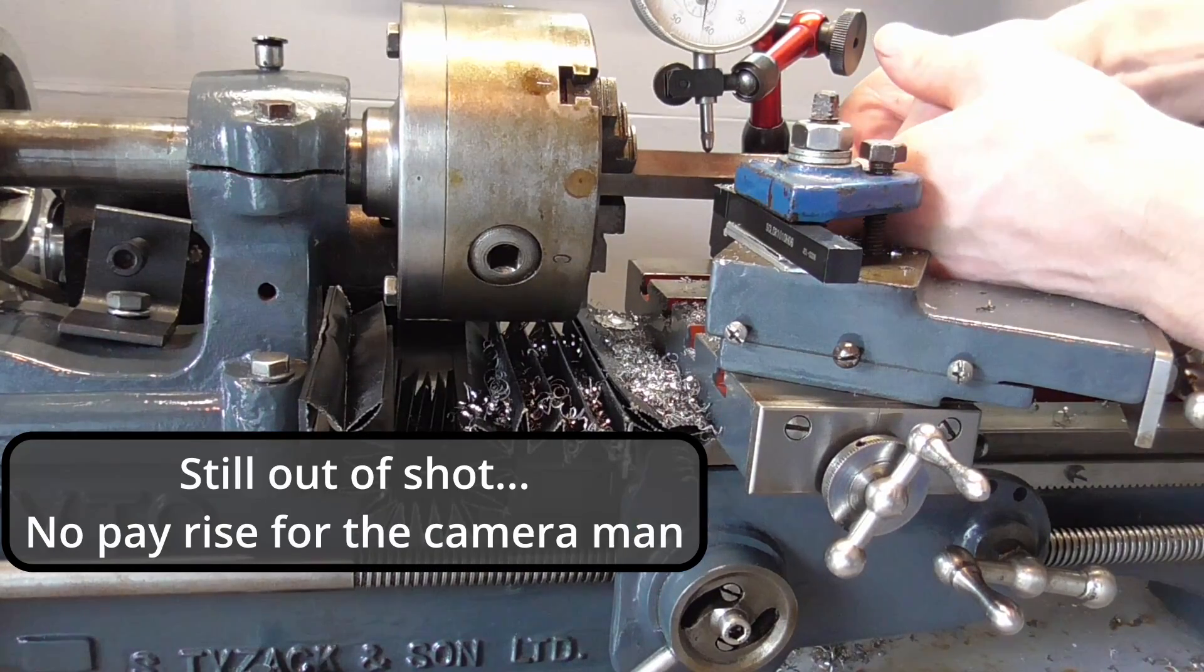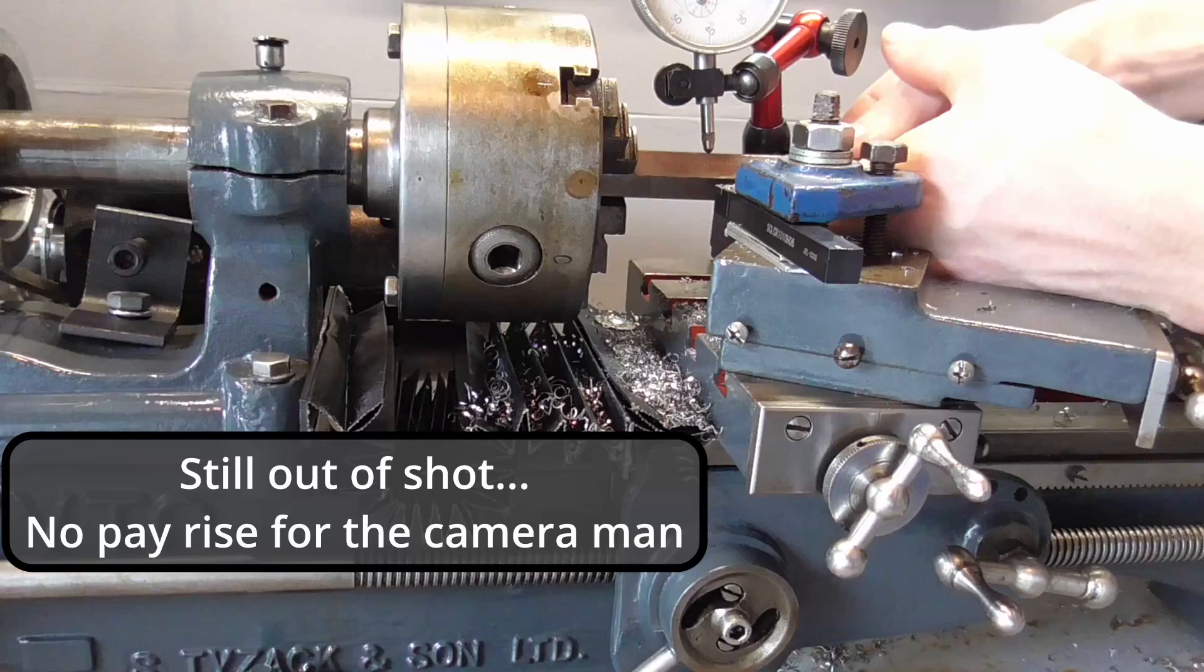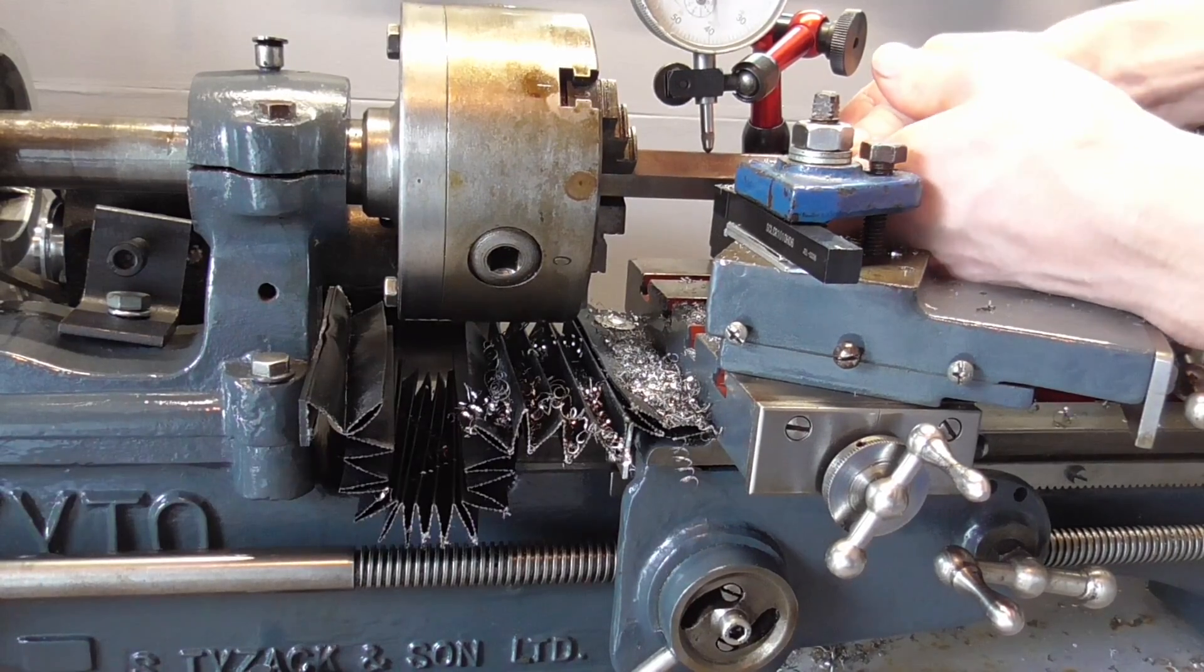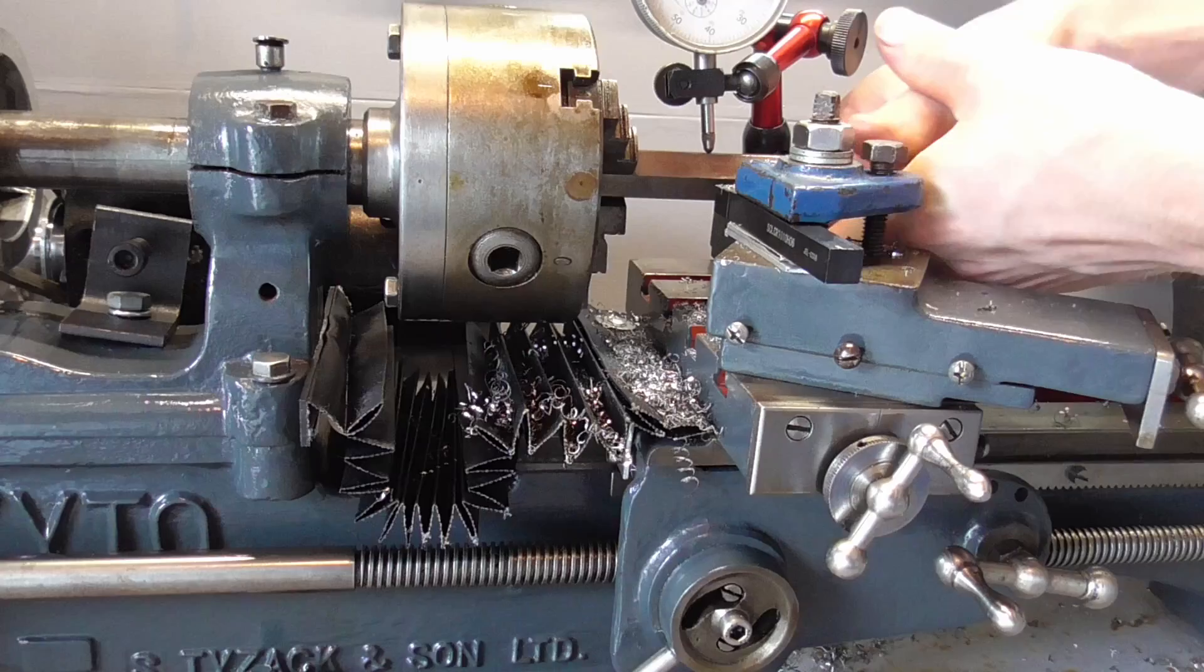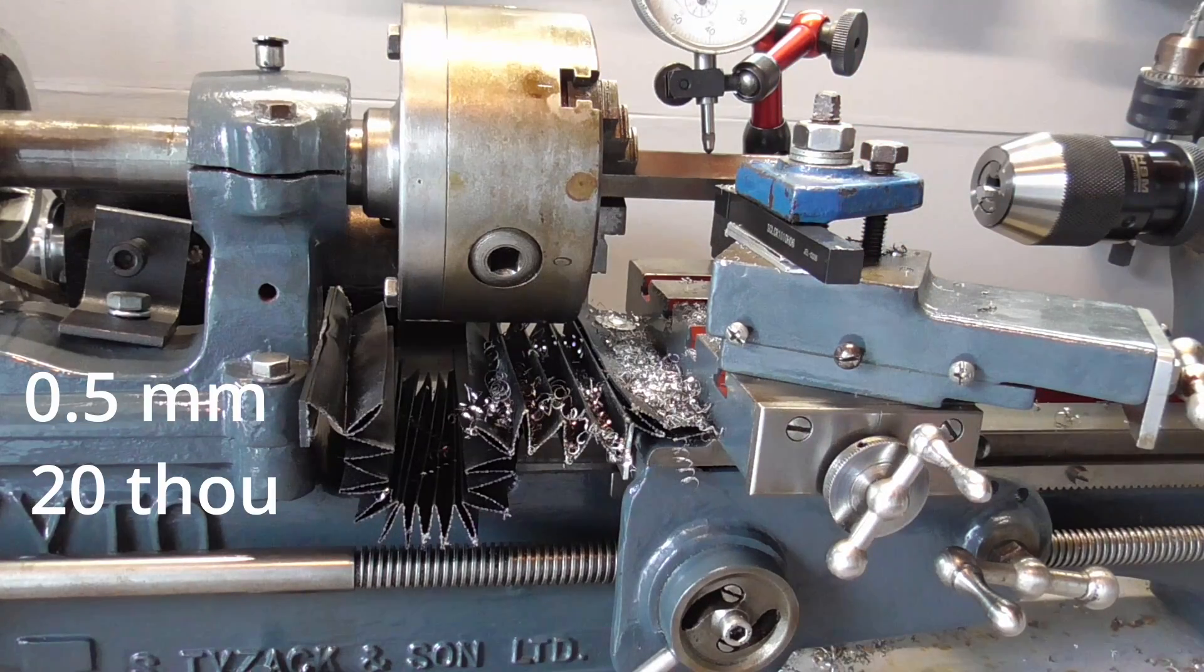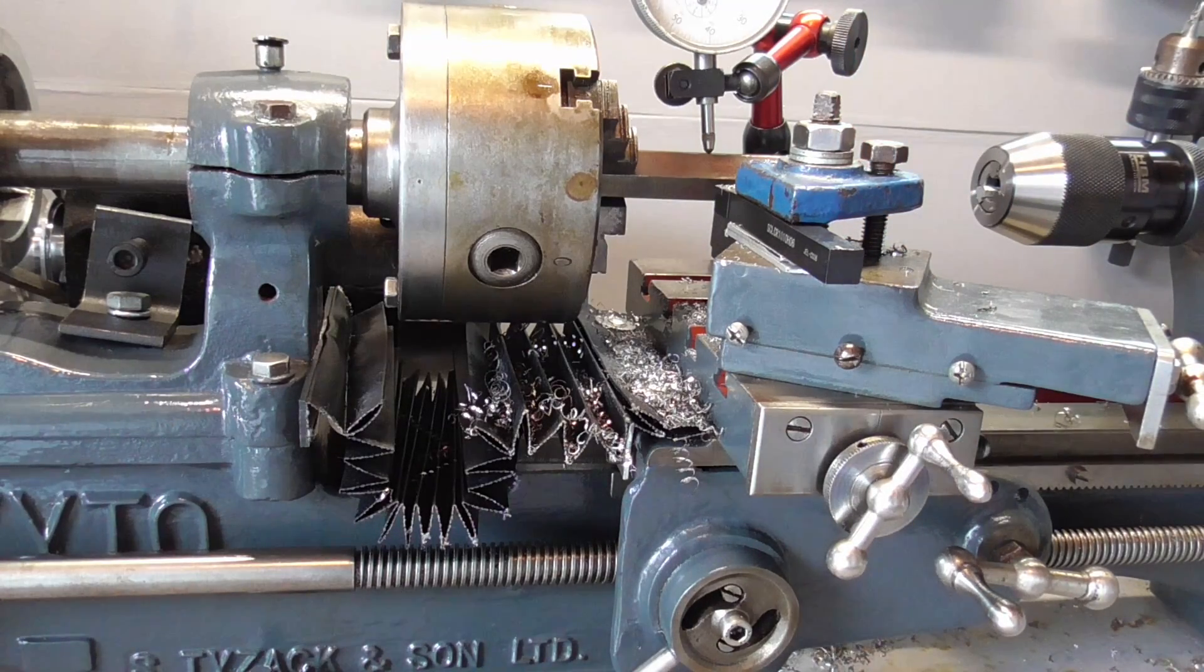I will check the amount of play in the spindle bearings of the lathe. The lathe uses bronze bushings that are either worn out or they don't have the right tolerance, resulting in half a millimeter or 20 thou of play.